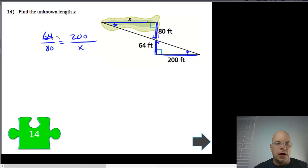64 and 80 have a common factor of 8. That becomes 8 and this becomes 10. 8 and 10 have a common factor of 2, so that can become 4 and that can become 5. 4 multiplied by 50 is 200. 5 multiplied by 50 will give us the value for X, which is 250.